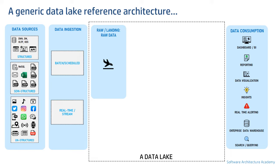Data stays here in its native format — that means no changes or transformations whatsoever are done from how the data is received from various sources. Data can be stored for as long as one wants, meaning it consists of historical data, and a snapshot of a particular point in time is always available here. This layer is sometimes also known as a data sink.